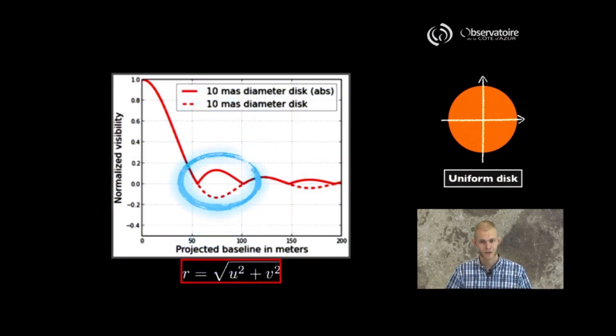The second feature I'd like to focus on here is what I've highlighted here on the screen with this blue circle. The fact that in some places the visibility function can actually take negative values.